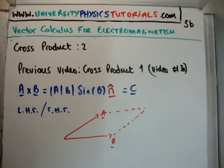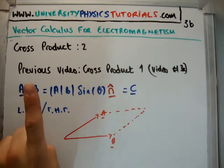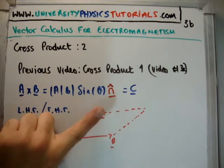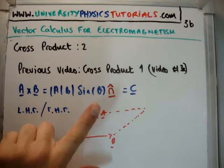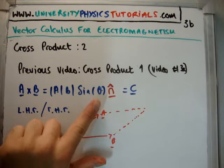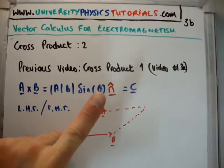So how do we get the direction of C, which is A cross B? The first vector is the one that's written first, so in this case it's A. What you do is you get your index finger and you point it in the direction of A, or your first vector which is in this case A. Then you get your thumb and you point it in the direction of your second vector, in this case B. And then what you do is you extend your middle finger perpendicular to them, and that's the direction of C.